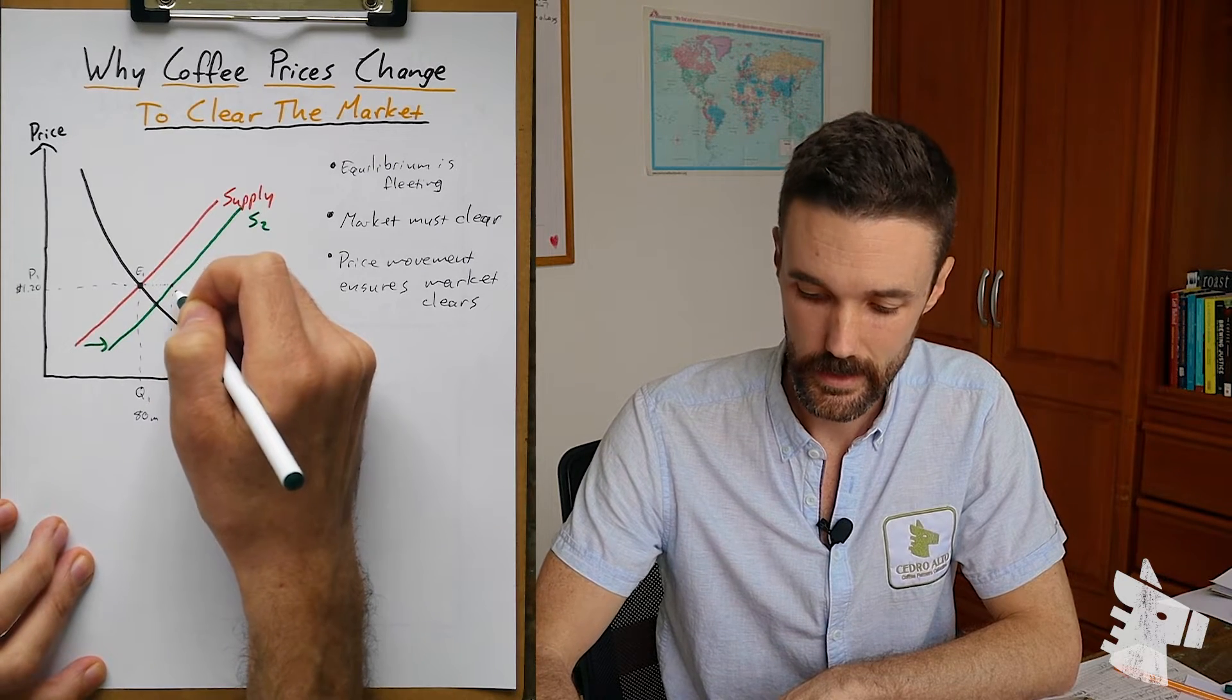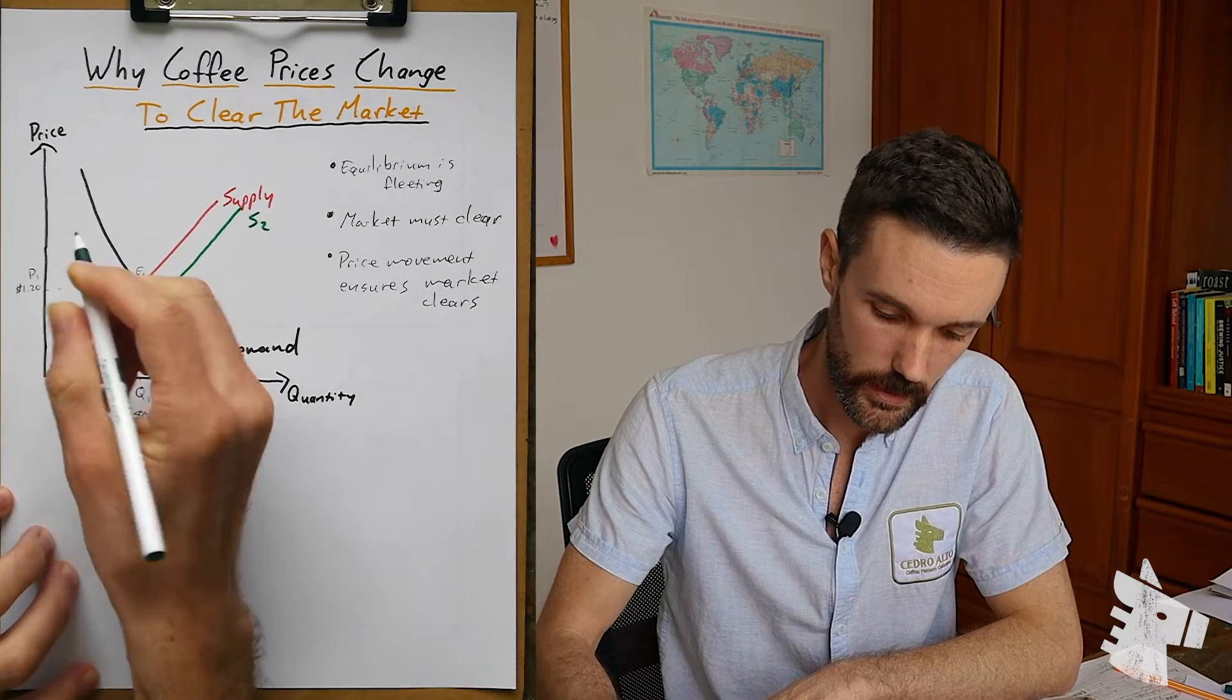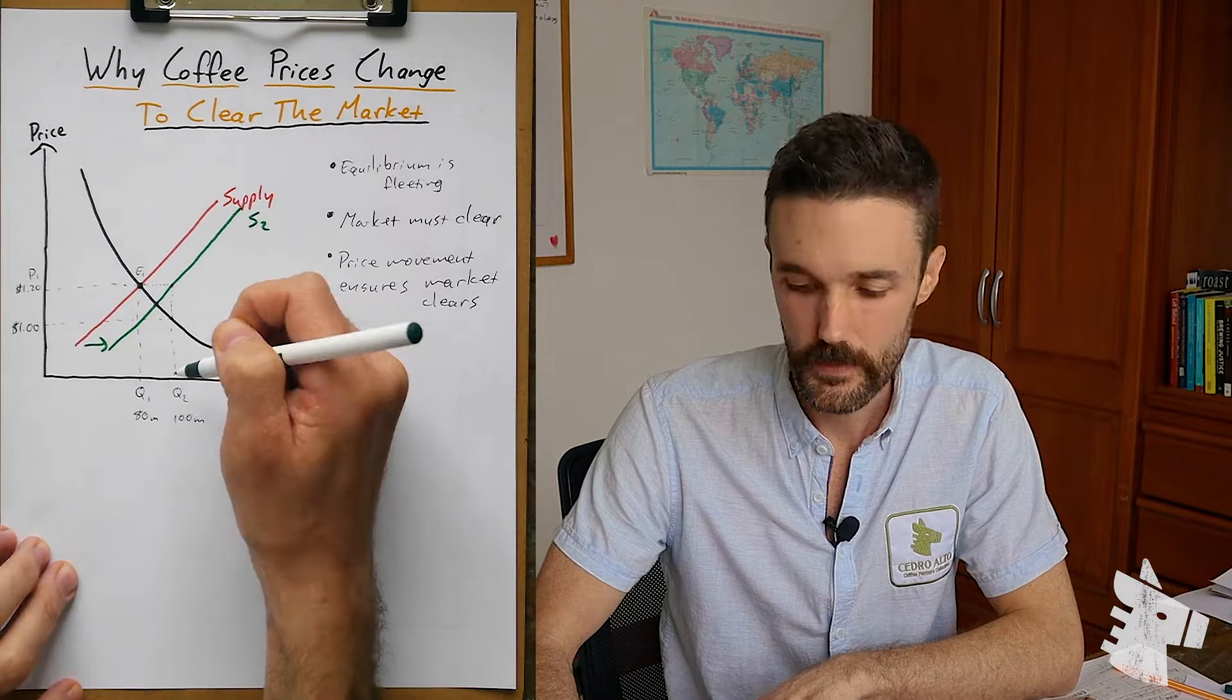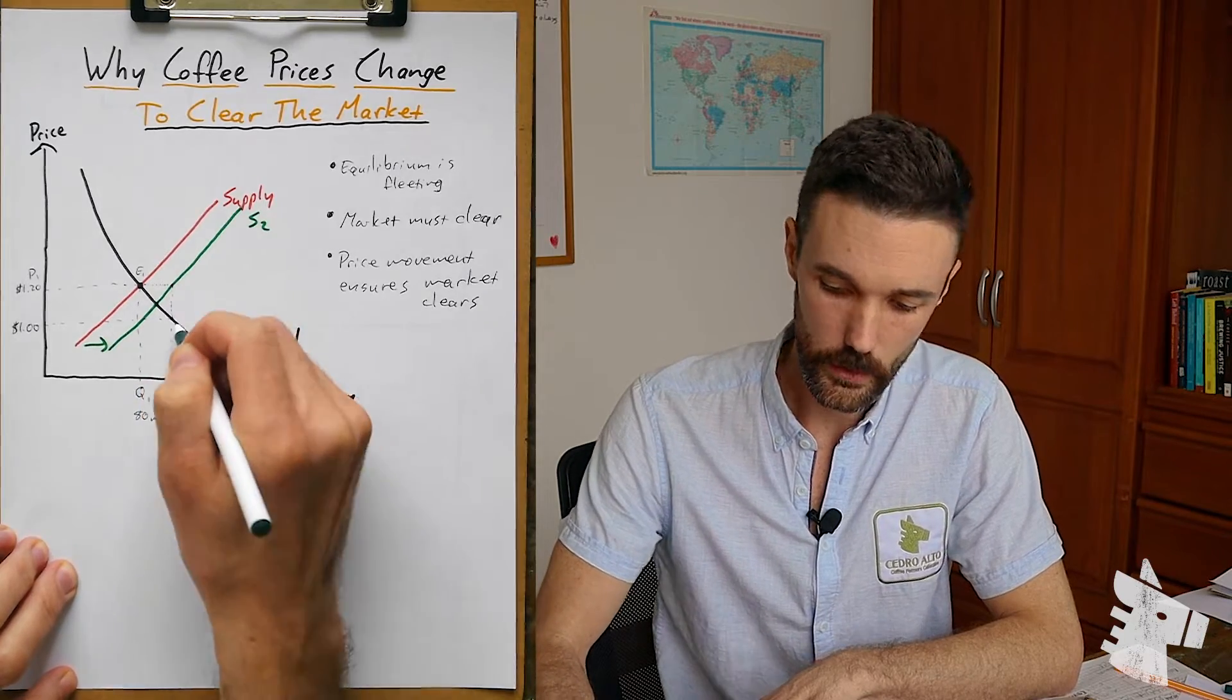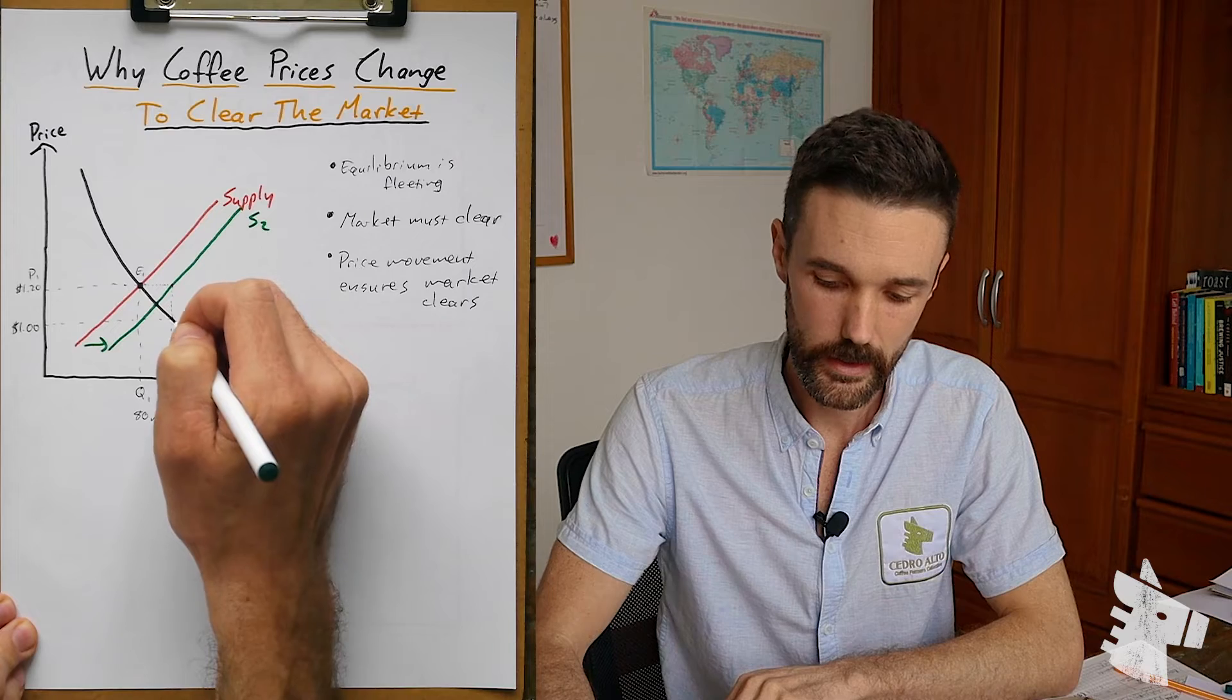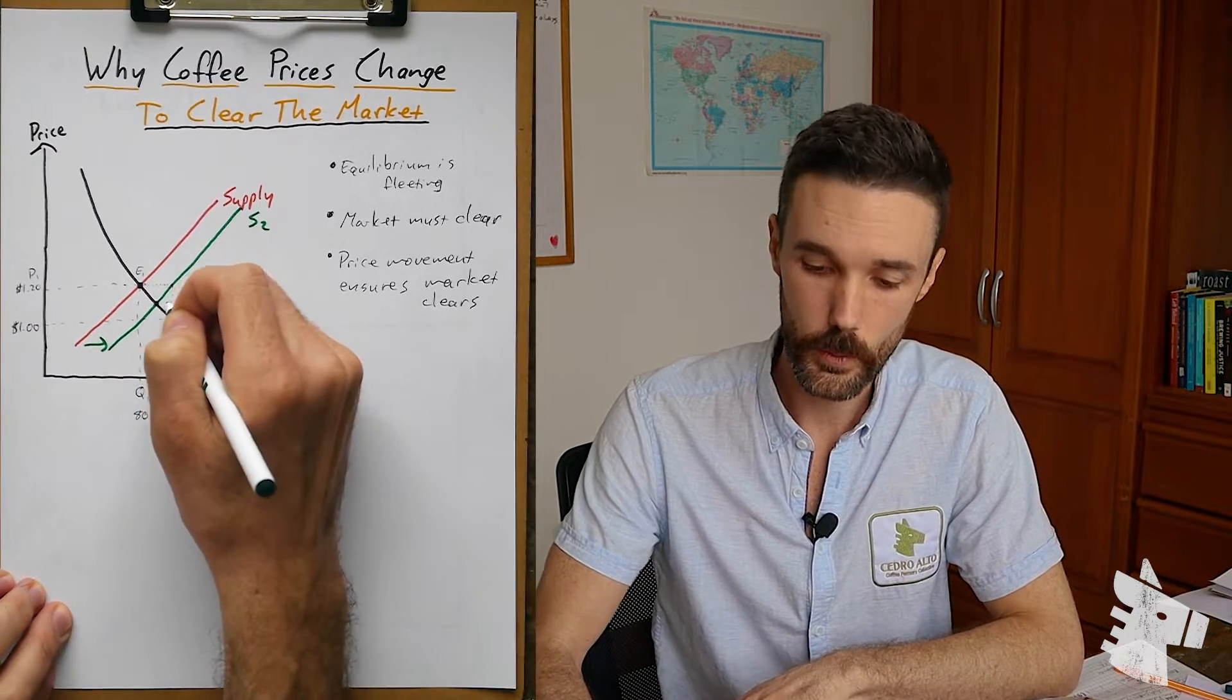But then the buyers say, well, if you want us to take 100 million bags, we're going to need that all the way down here at $1 per pound. Because for $1.20, 80 million bags was really just enough. If you want me to buy more, I'm going to need a better price. So we go down here to $1, where consumers or demanders will be happy with this quantity. But of course, the suppliers say, no, at $1, it's really not worth producing those additional 20 million bags. So they negotiate and argue, and we end up somewhere in between.